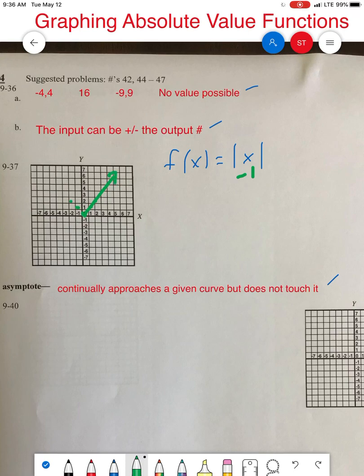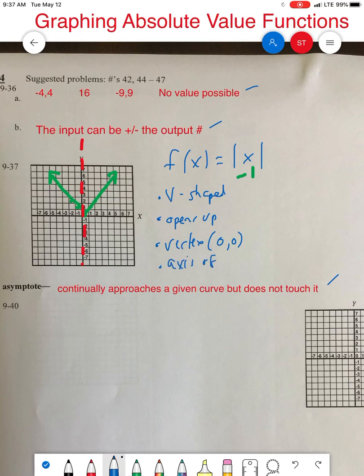Let's describe it fully. It's V-shaped, in the shape of a V. This particular one opens up. The vertex is at (0,0). The axis of symmetry comes right down the middle—that would be the y-axis. This is known as continuous; it just keeps on going and it actually goes on forever.